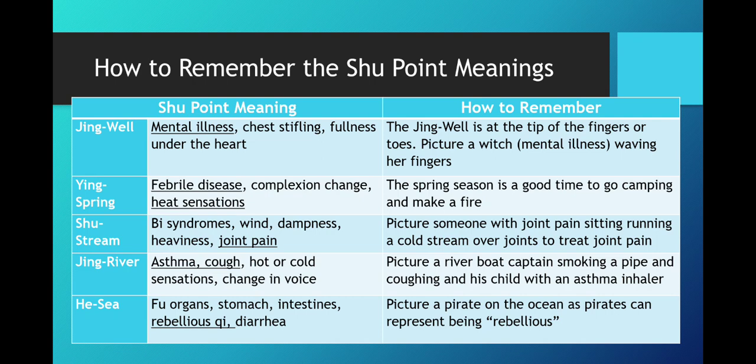Then after that we have the Shu Stream. This one treats bi syndromes, wind dampness, heaviness, and joint pain. For this one you can picture an athlete with joint pain running a cold stream of water over the joint to try to alleviate the pain.